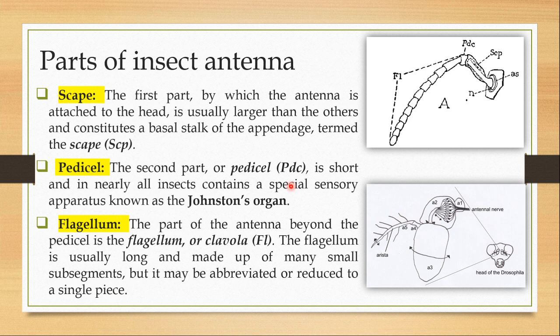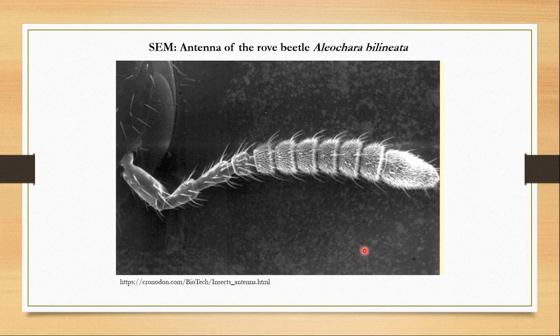The part of the antenna beyond the pedicel is known as the flagellum. The flagellum is usually long and made up of many small segments, but it also may be abbreviated or reduced to a single piece, like you see in flies. If you see an electron microscopic picture of an antenna, you can see there are small hair-like structures on every segment — these are known as the sensilla. On these sensilla, the cells have receptor molecules which bind with the odor molecules, giving neural signaling to the insect and helping them perceive smell.